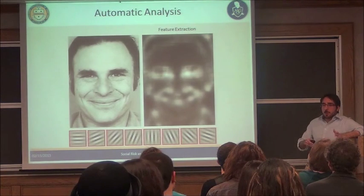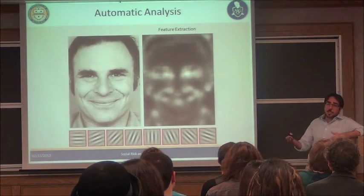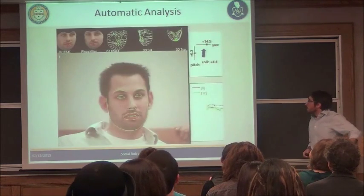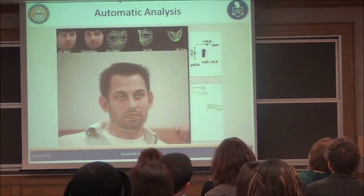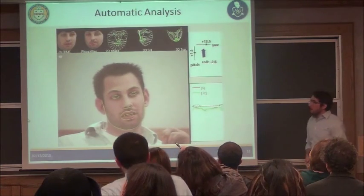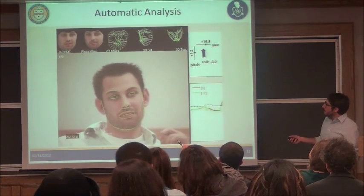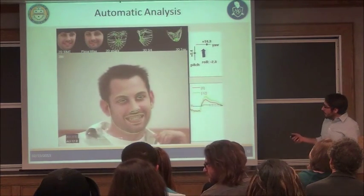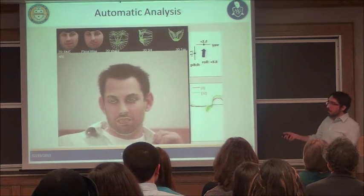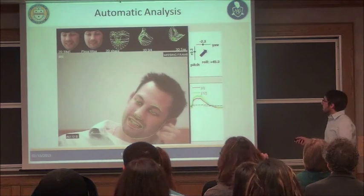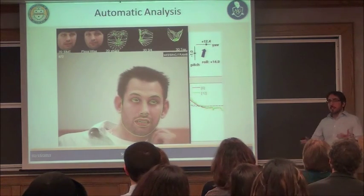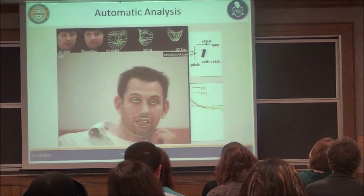We can compare the automatic coder to the human and see if they agree. We can also demonstrate the full system in video — here you see in green we're tracking the face not just on one frame but over time, even as the subject moves in different orientations. We remove the rigid head motion and pose, and we're able to detect when he's smiling or not with this graph, and also determine his pose. That's a demo of the whole system coming together.